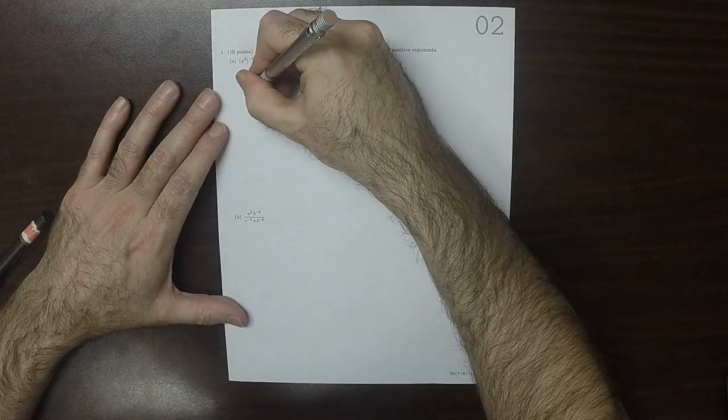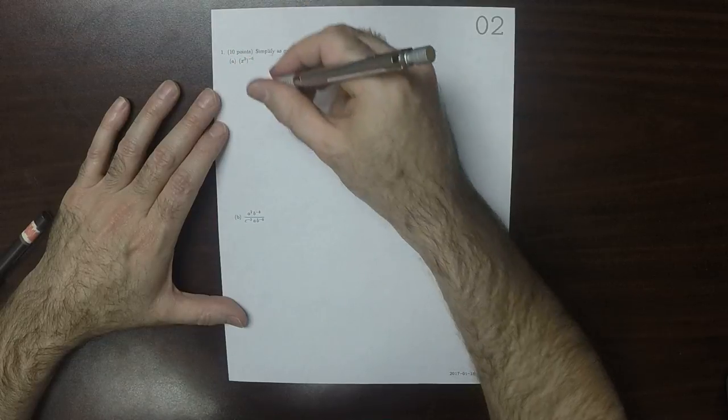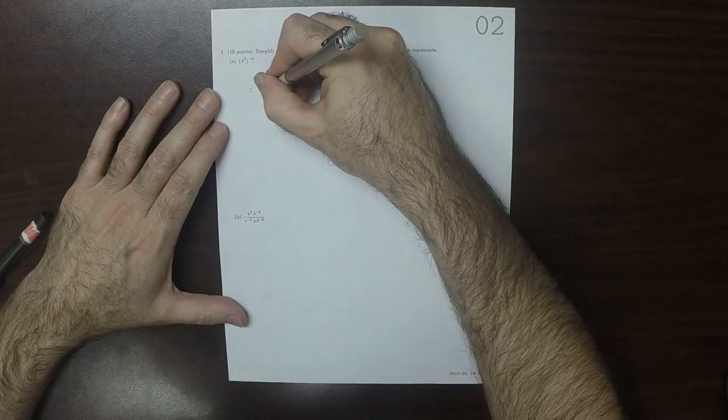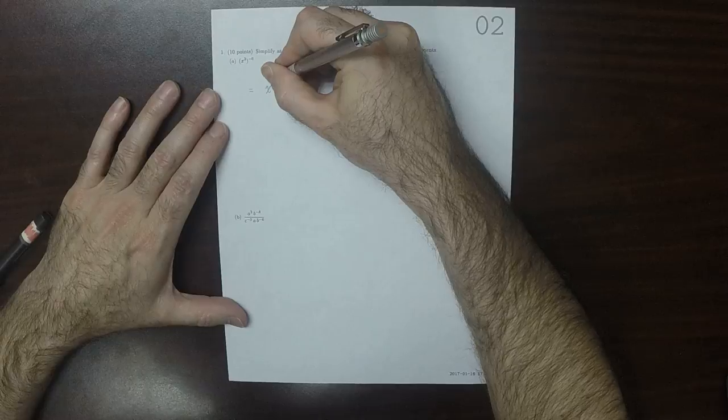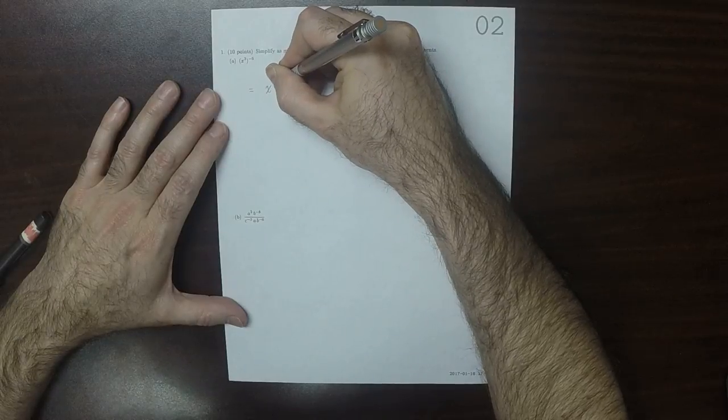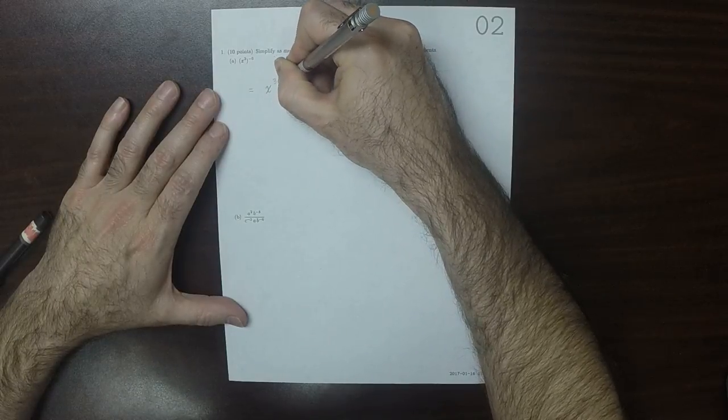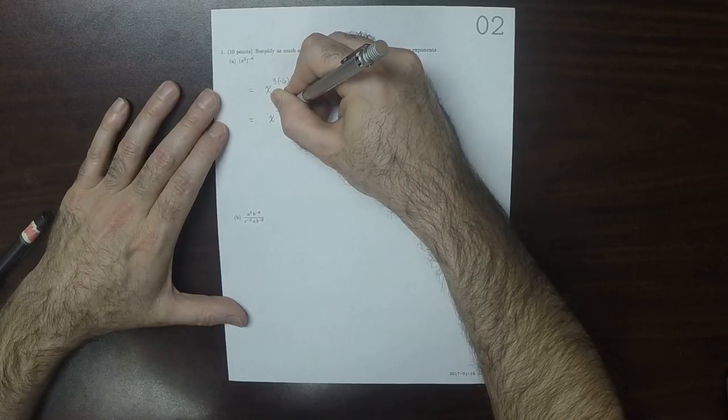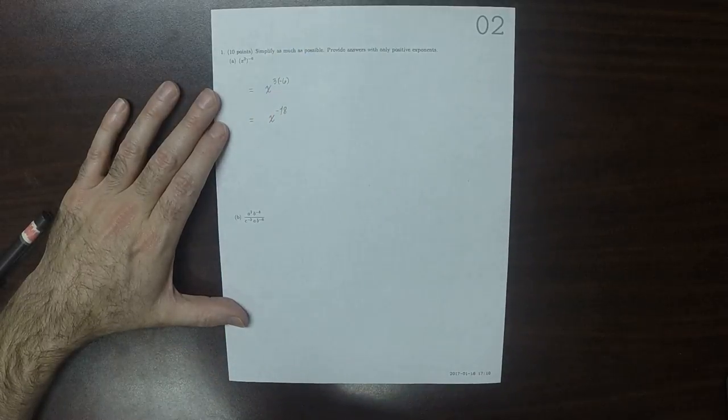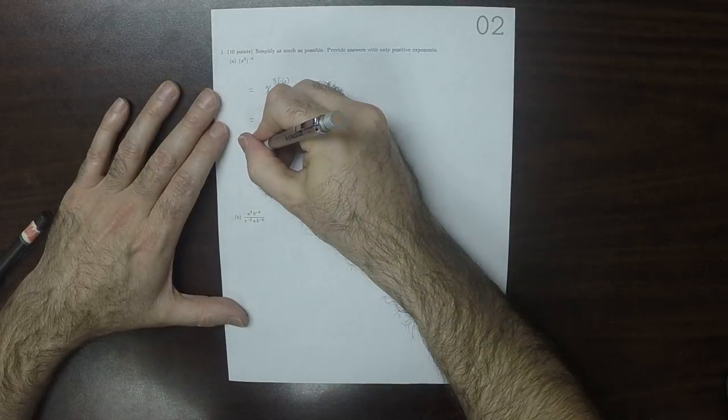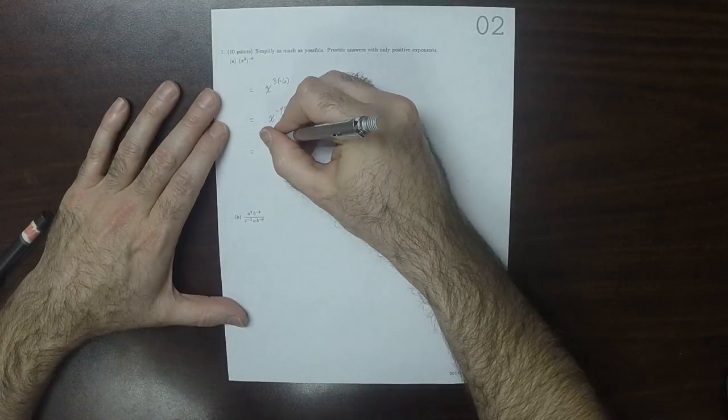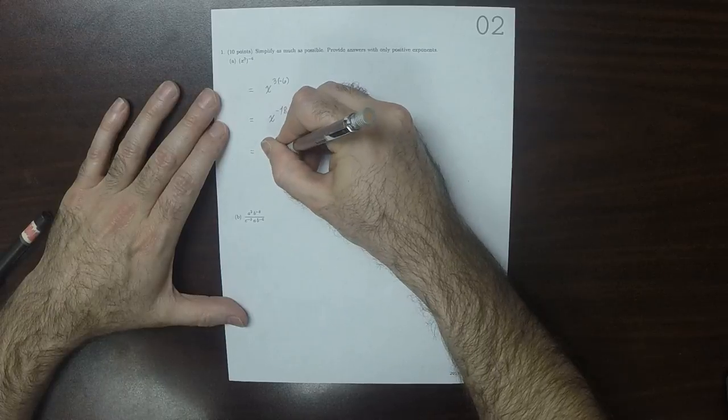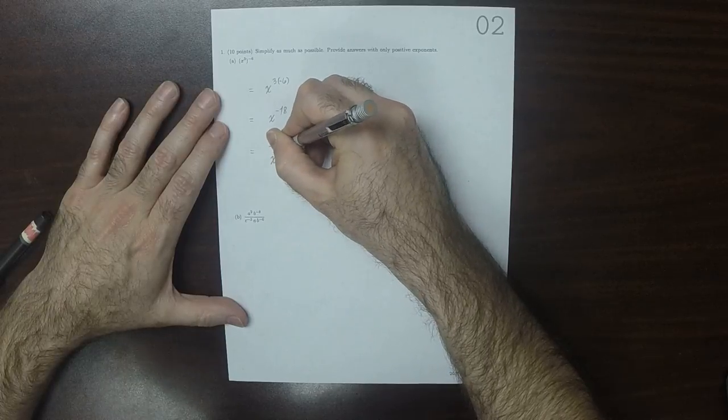In the first place, these exponents are iterated, so we could write that this is x to 3 and then multiplied by negative 6, which is x to negative 18. But it said use only positive exponents, so to make this right, we'll write 1 over x to 18.